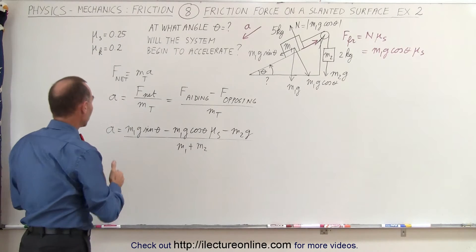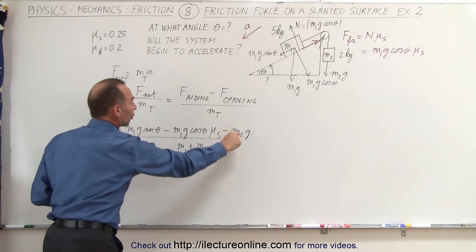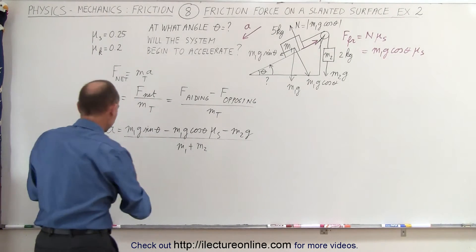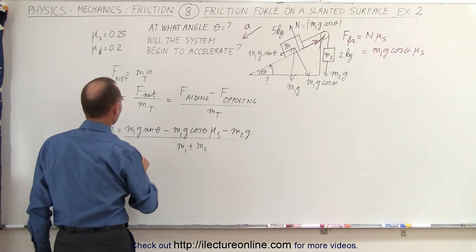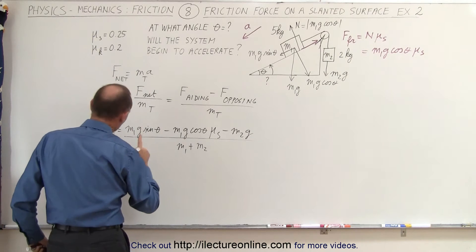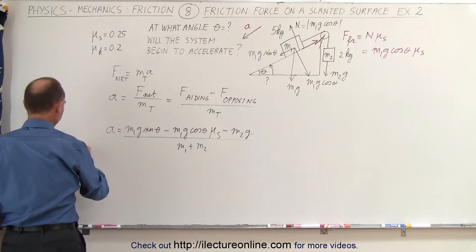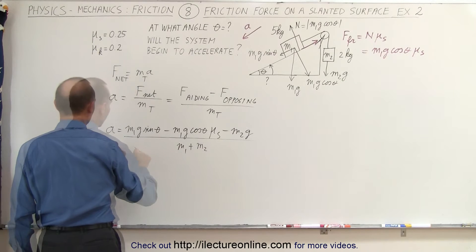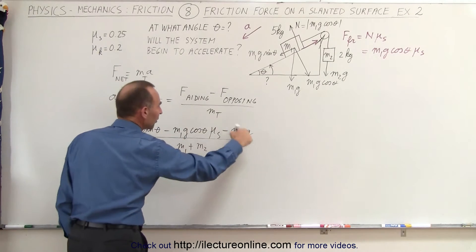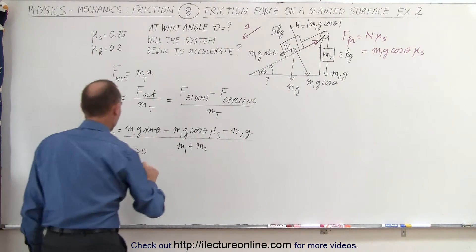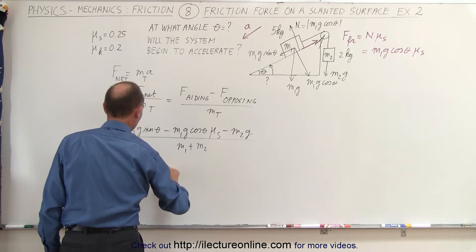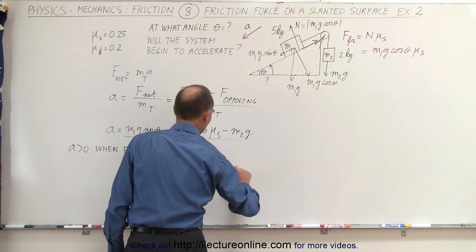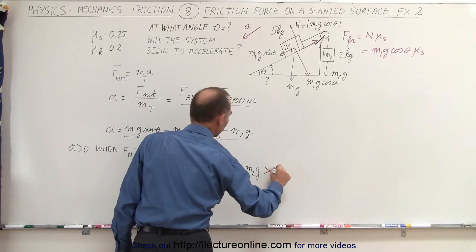You won't have acceleration until the net force is greater than zero, so we're going to find the point at which the net force equals zero — or more precisely, the condition where the numerator is greater than zero. That means we want M1g sine theta minus M1g cosine theta times mu sub s minus M2g to be greater than zero.